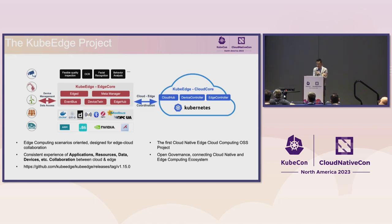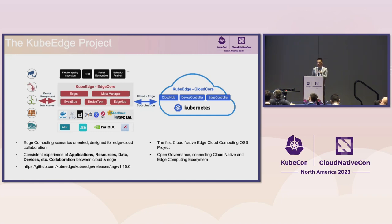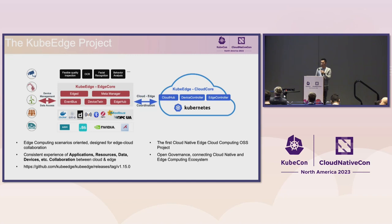We just recently released our 1.15 release last month. We do four releases every year, following upstream Kubernetes. However, Kubernetes just updated to three releases per year, but we still keep four releases per year to give the community very frequent updates and ensure we catch up on everything.